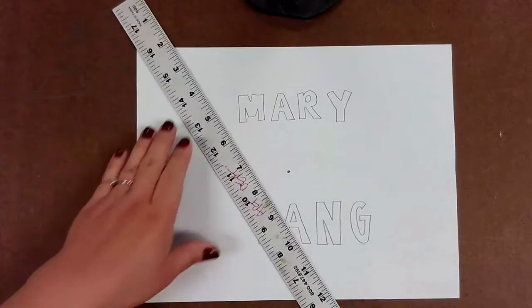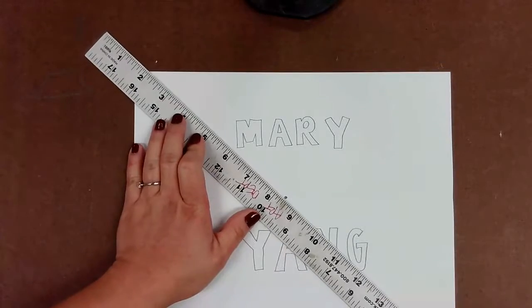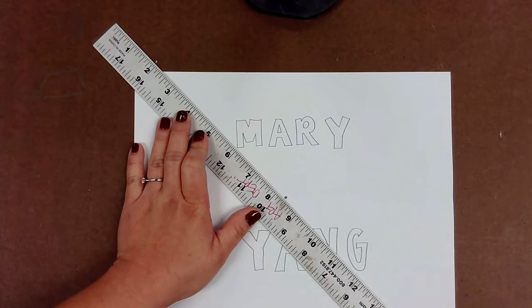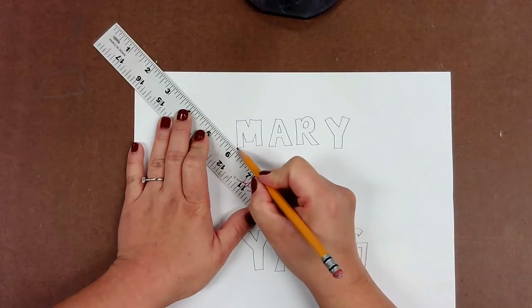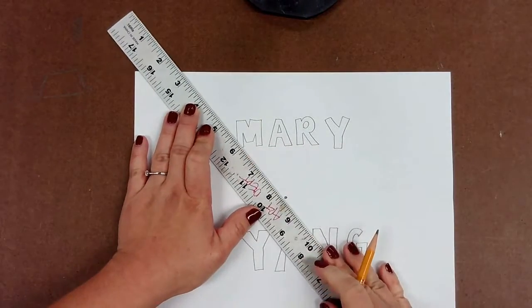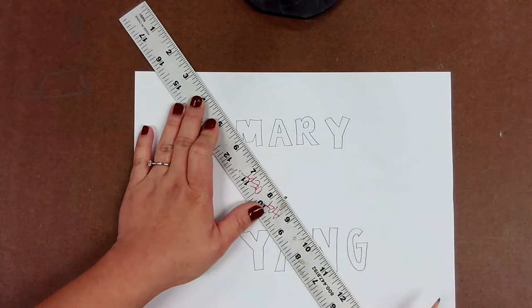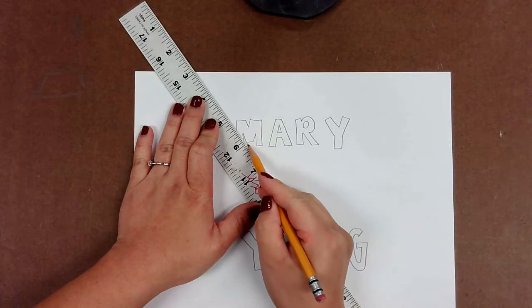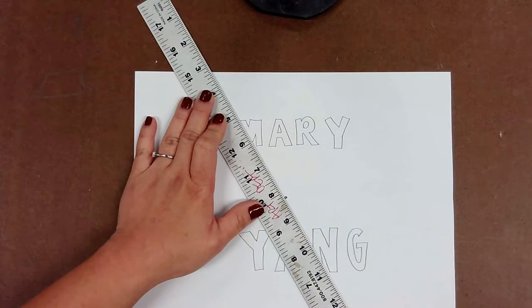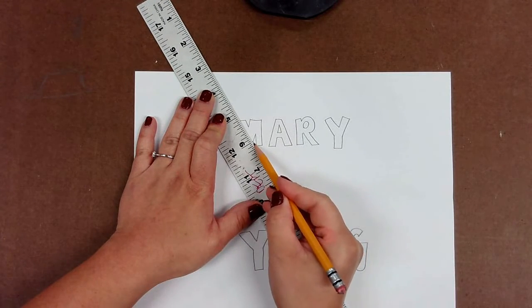All right guys, now we are ready to turn our letters into 3D blocks. You're going to line up your straight edge or ruler to the vanishing point, and you're going to go about each letter. In any corner that you see, you want to start lining things up with the vanishing point and then just draw a small little line to extend it further.